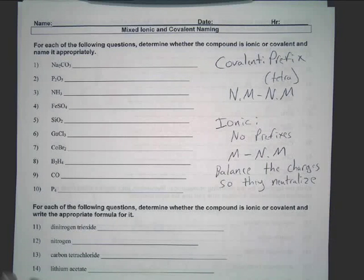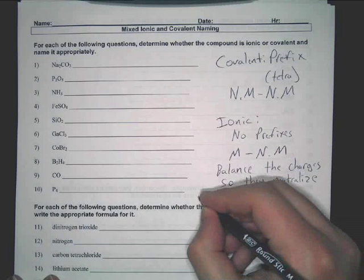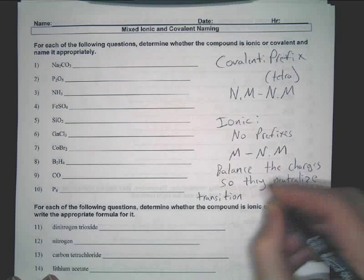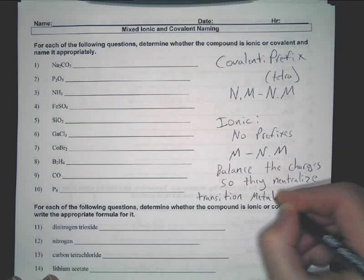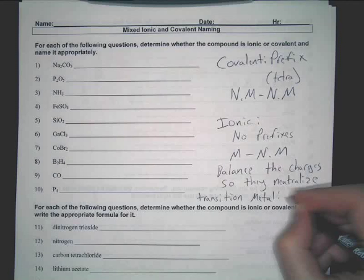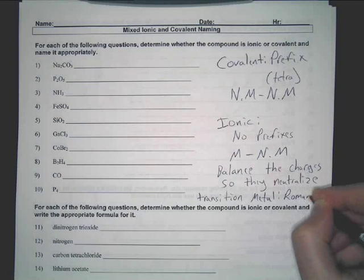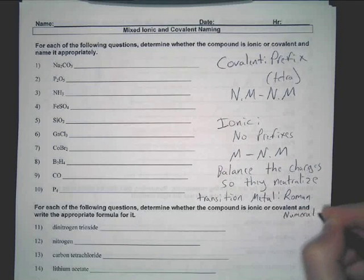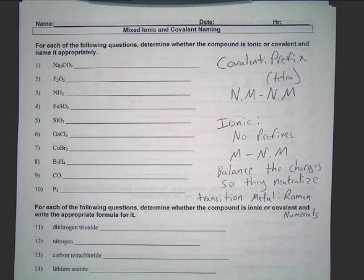Now, the only other thing you need to remember is that if you have a transition metal, what are you supposed to include? Yes, Roman numerals. I'm running out of room here. Do not forget that. So that's the quick review of everything.